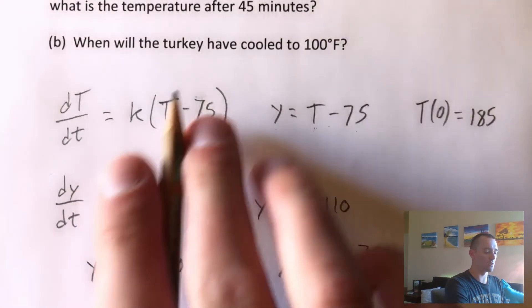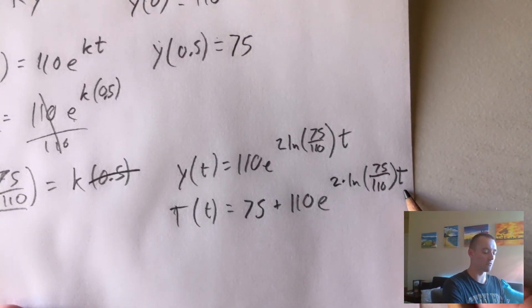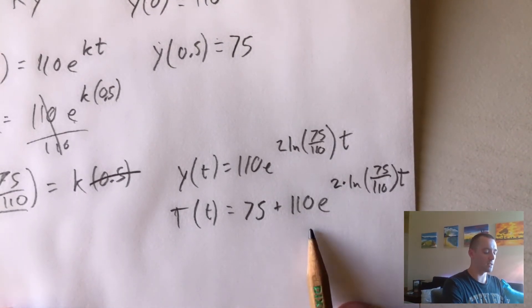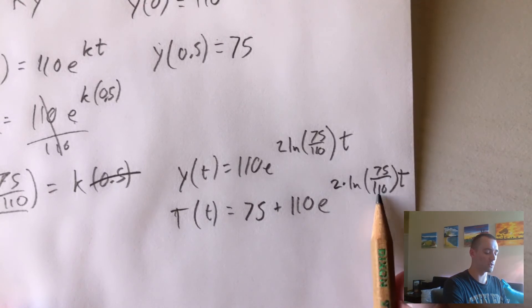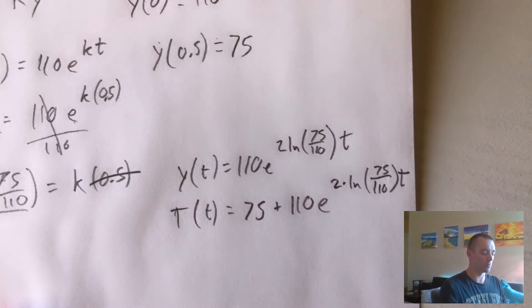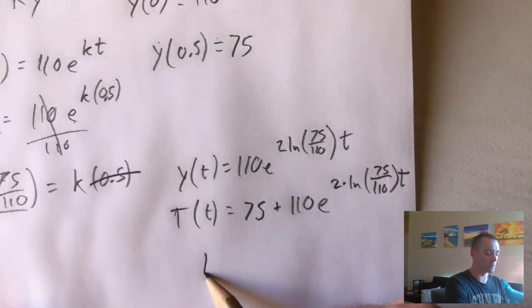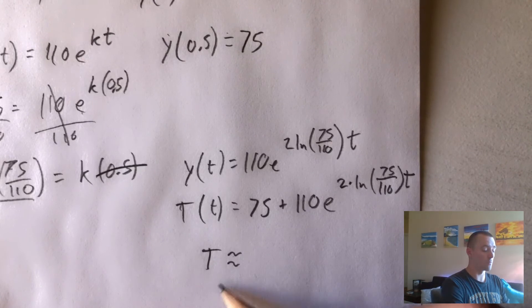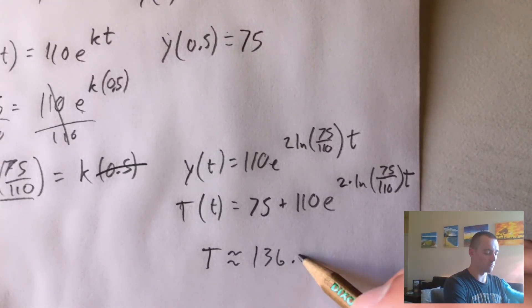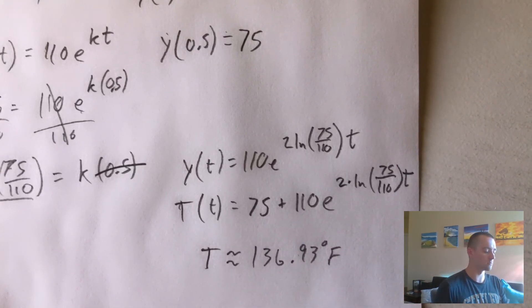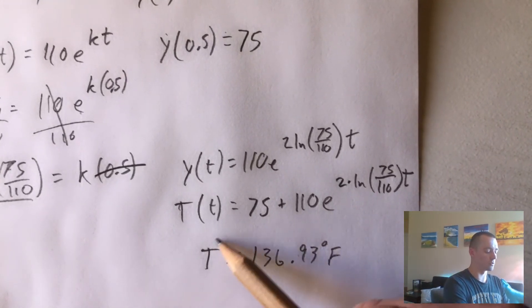To figure out the temperature at 45 minutes, we just plug in 0.75 for T. So we get: 75 plus 110 times E to the quantity 2 times natural log of 75 over 110 times 0.75. Plugging that into a calculator gives us that the temperature would be about 136.93 degrees after 45 minutes. That's the solution to part A.